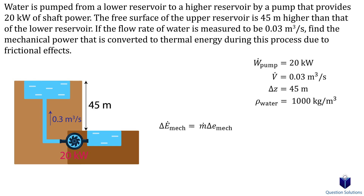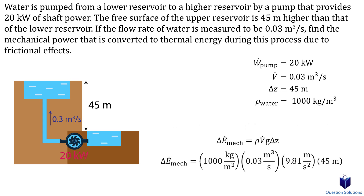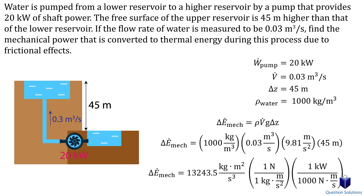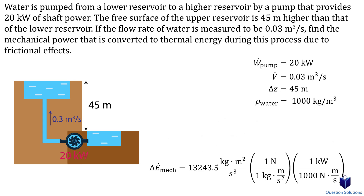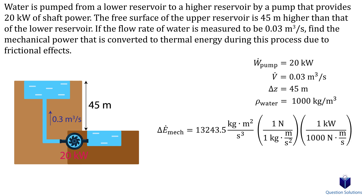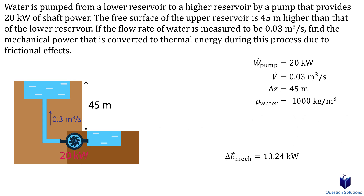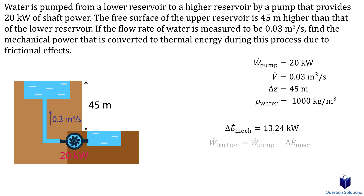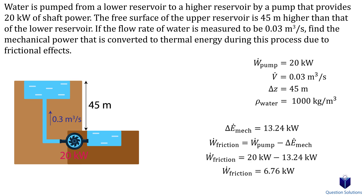The total mechanical energy equals mass flow times energy on a unit mass basis, where potential energy per unit mass is gravity times height. Mass flow equals density times volume flow rate — using water density of 1000 kilograms per cubic meter. Plugging in values with unity conversion ratios (1 newton = 1 kg·m/s², 1 kilowatt = 1000 N·m/s), we find the shaft power required in a perfect frictionless world. Since the pump actually provides 20 kilowatts, subtracting the two values tells us that 6.76 kilowatts is converted to thermal energy due to friction in the piping.